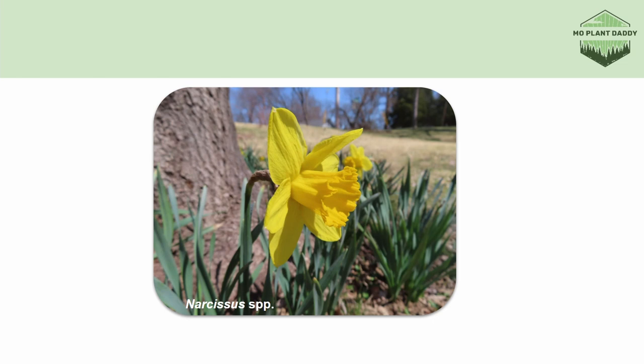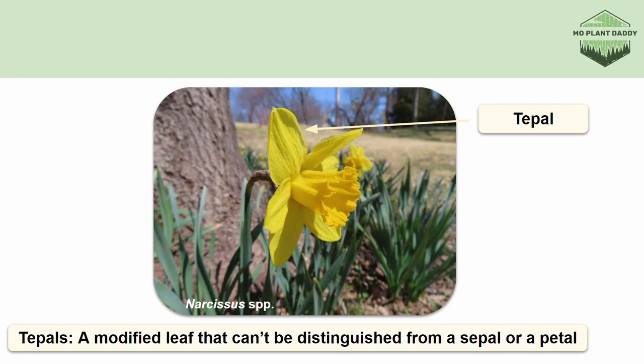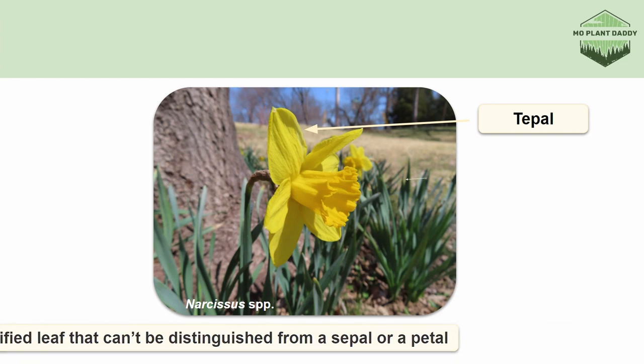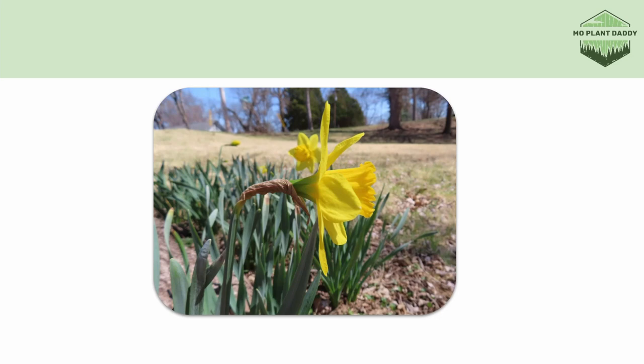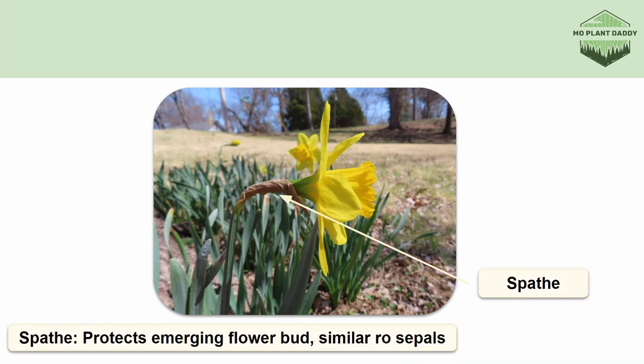To get a closer look at what's inside of an ovary we're going to take a look at a common daffodil. First let's go over some new terminology. Those yellow modified leaves that we might think are petals on a daffodil can be considered tepals, because there are some petals and sepals mixed in there but they're indistinguishable. Additionally, a daffodil has a notable structure in the middle called a corona, which are just tepals that fuse together. If we look at a full side profile of a daffodil we'll see a dry brown structure that looks sort of like an onion skin — that's called a spathe, which protects the flower bud as it gets ready to bloom.